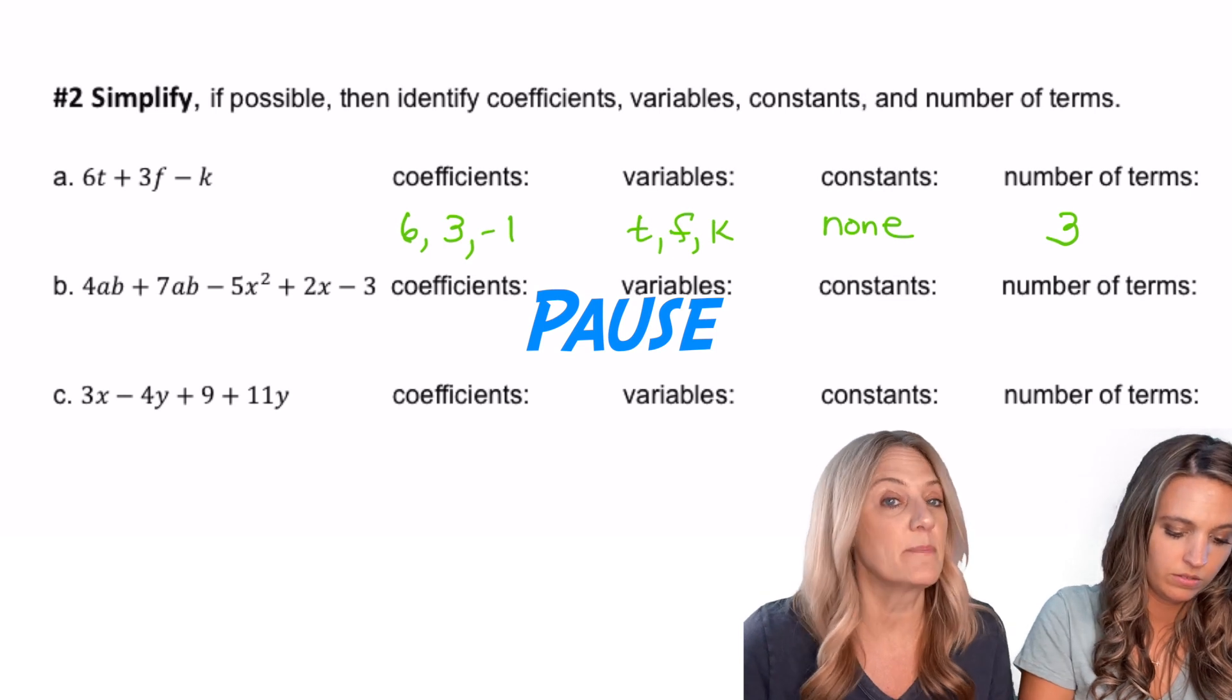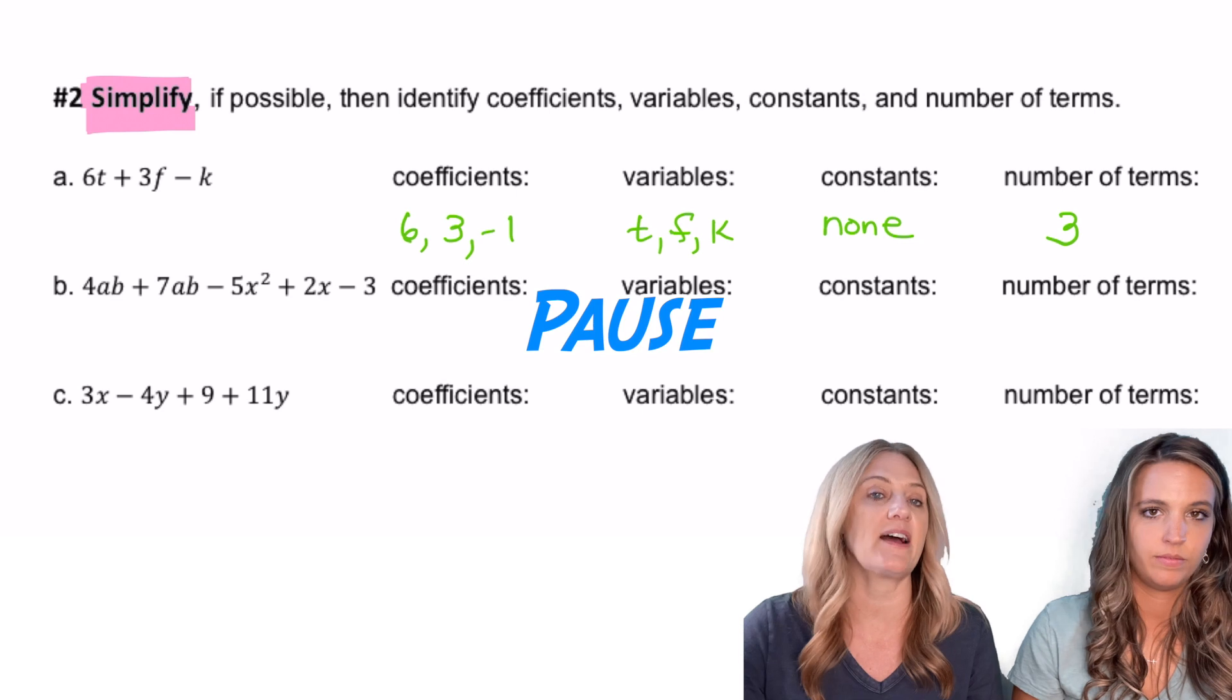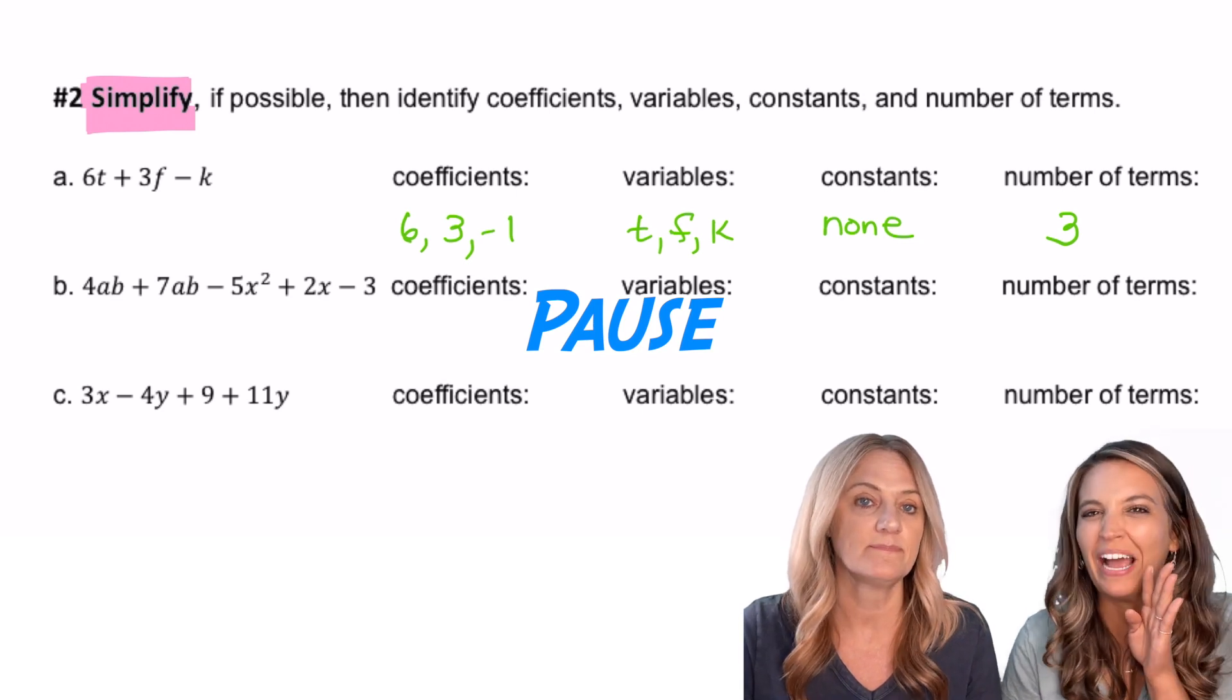You understand what we're asking for now, right? Go ahead and try the next two examples. Pause. But here's a good hint: be sure and simplify before you identify the pieces. That means combine like terms.